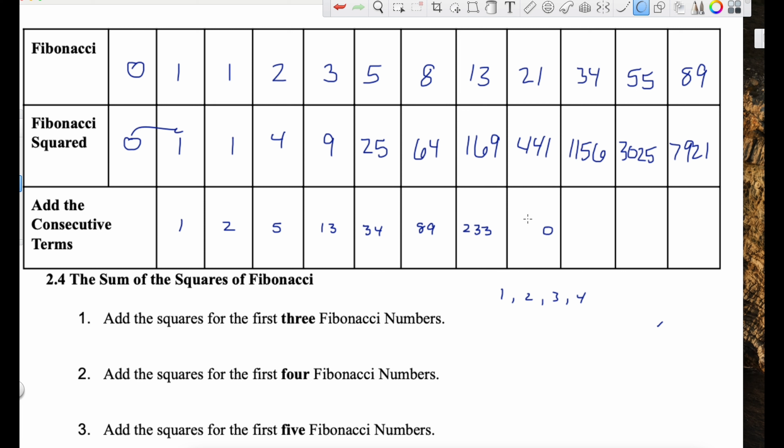So what is 13 times eight? Eight times three is 24. Eight times one is eight. Plus two is 104. It worked. That's 104.